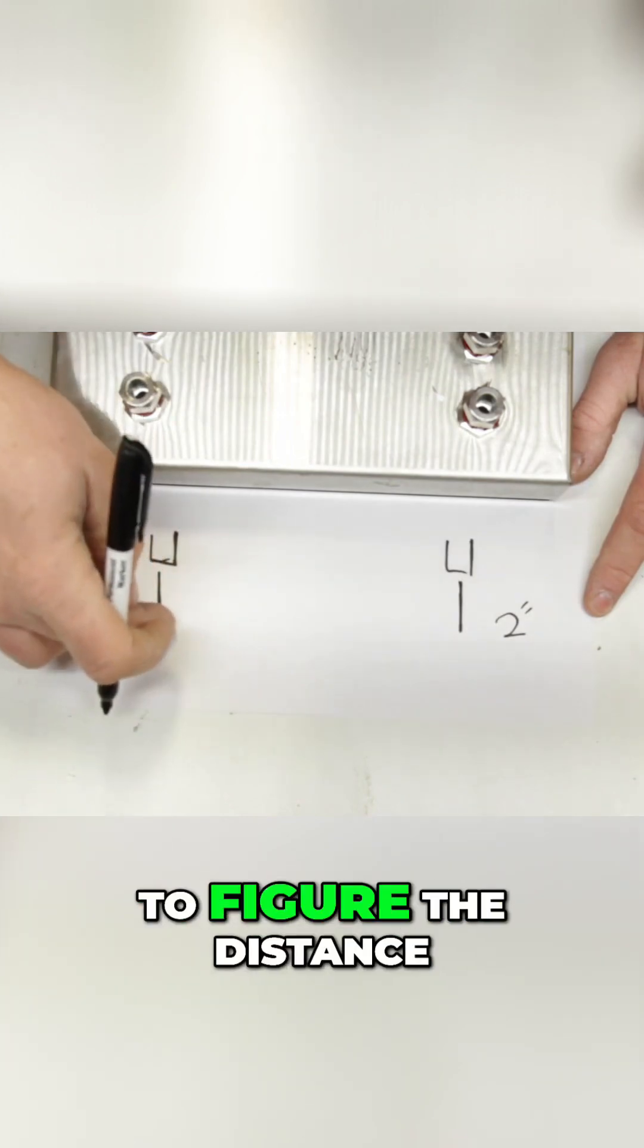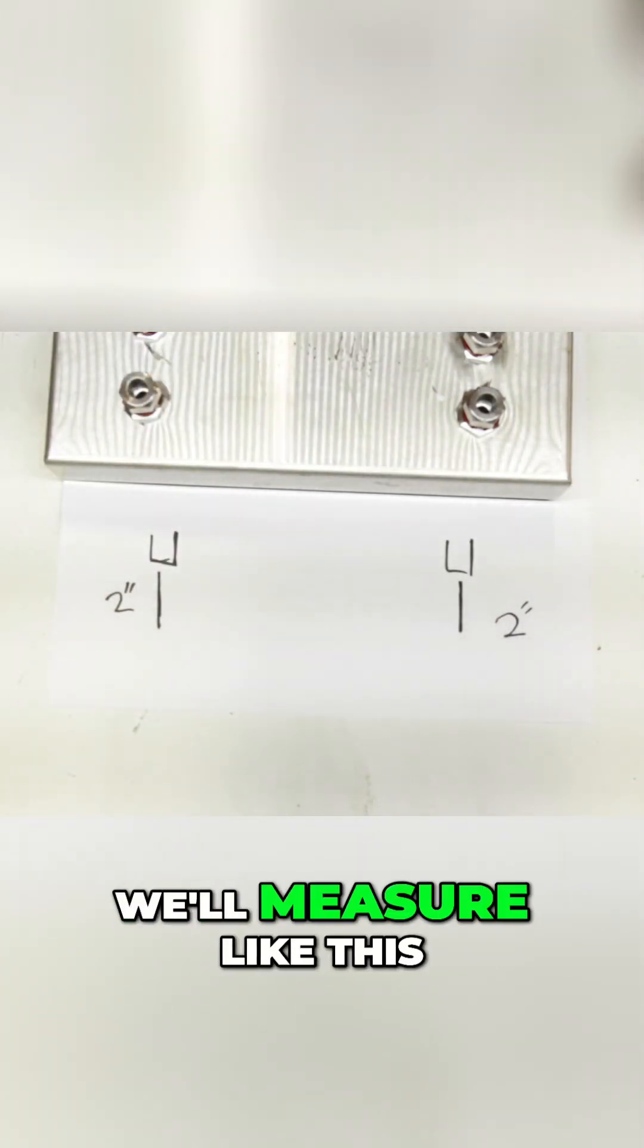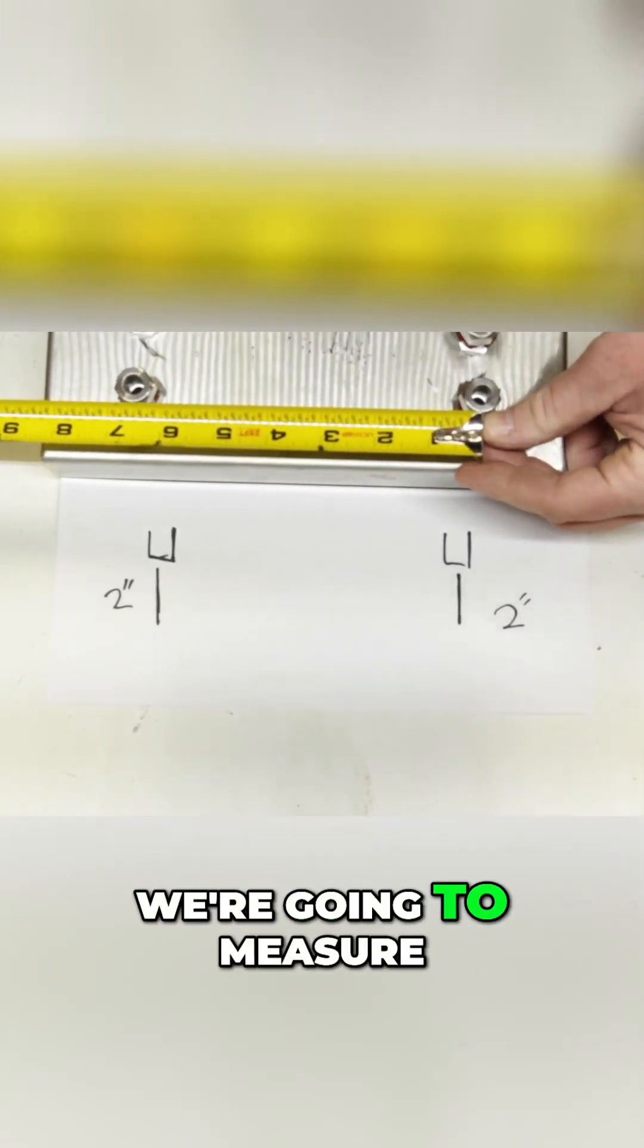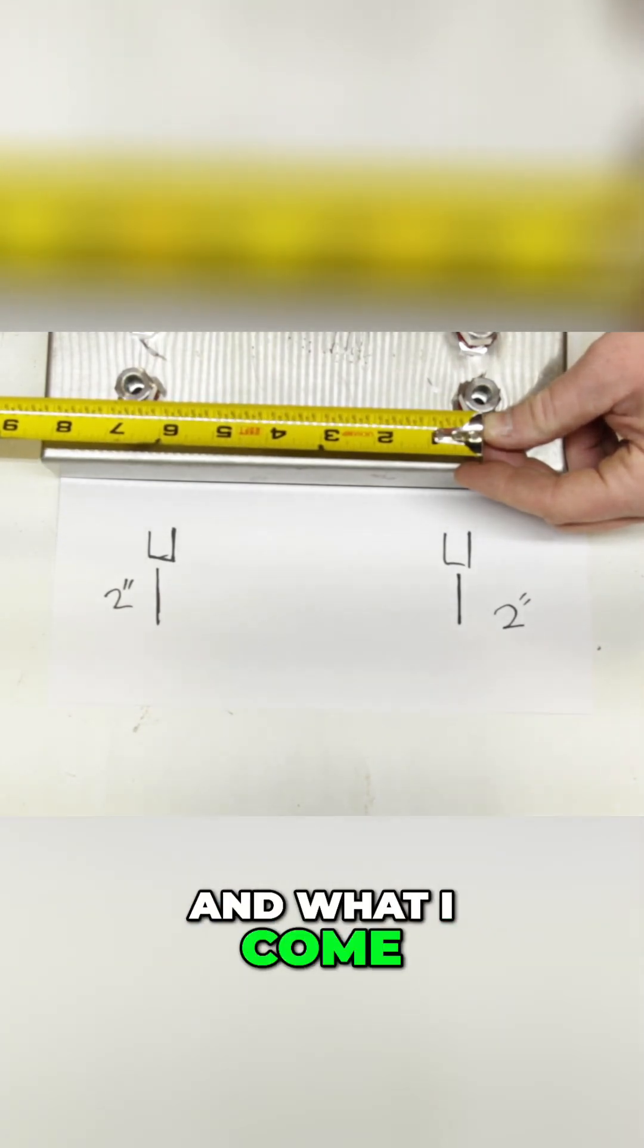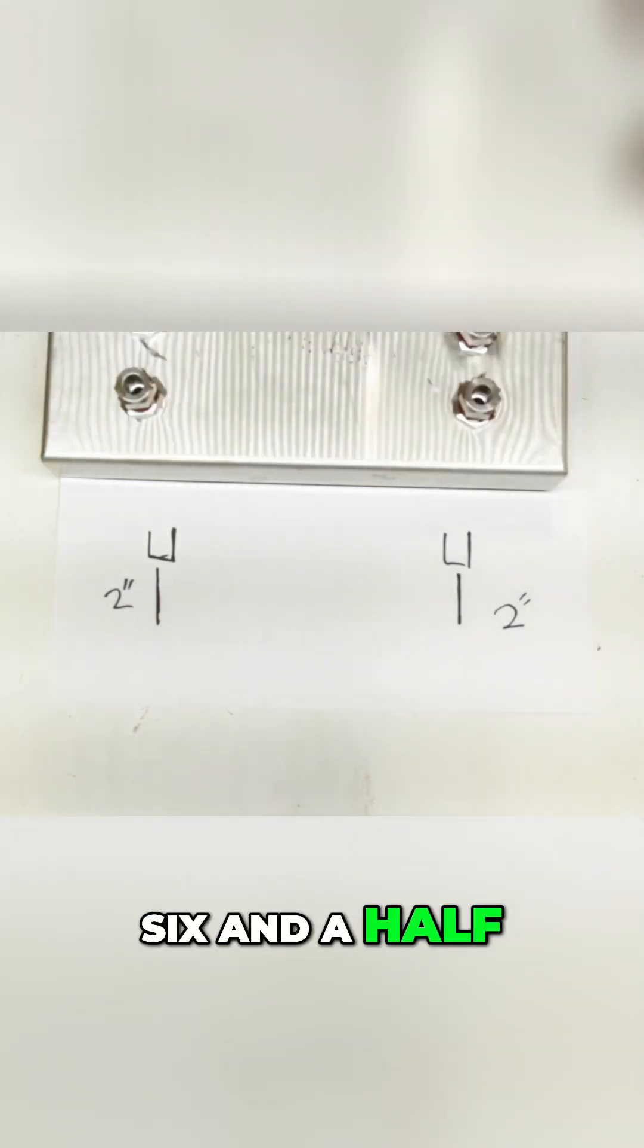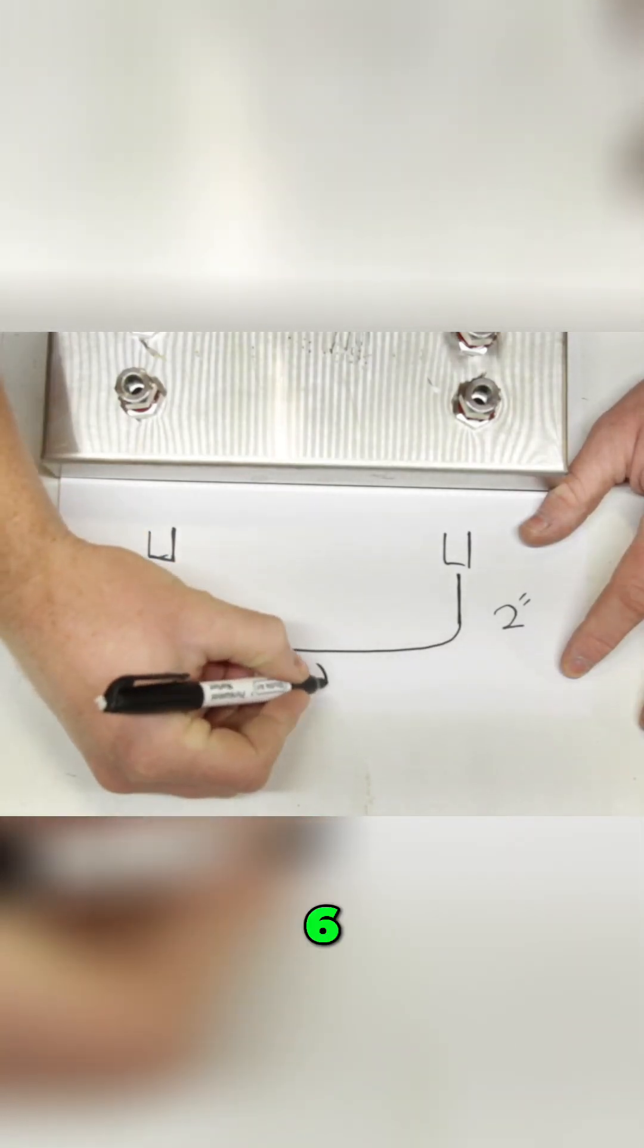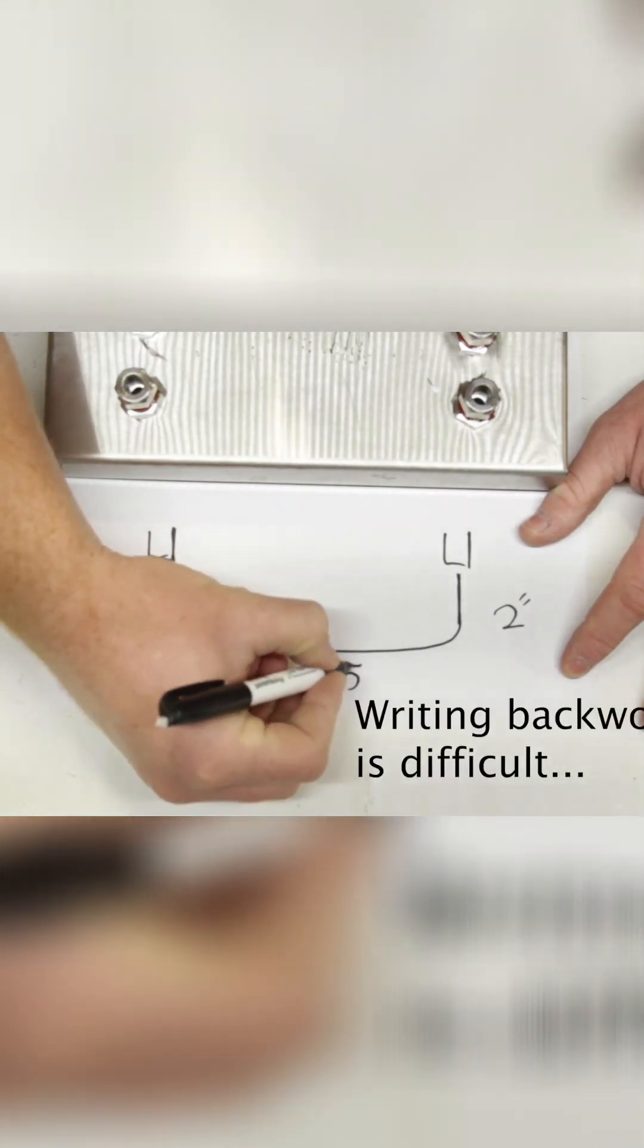Alright, so now we need to figure the distance between these two. We'll measure like this, from the center of this fitting to the very center of that fitting. And what I come up with is about six and a half inches, six point five inches.